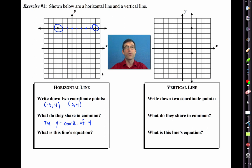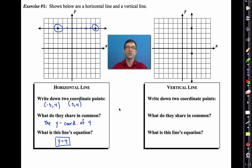The x-coordinates are different for each point on the line, but the y-coordinate is always four, and that turns out to be its equation. For a lot of students, they look at something like y equals four and think that's not the equation of a line — that's like the solution to an equation. But y equals four describes every point that lies on this line, because every point has a y-coordinate of four.